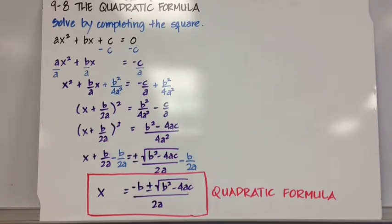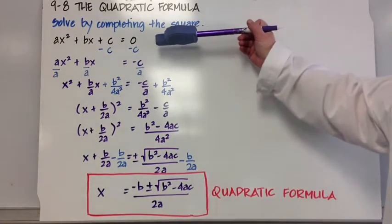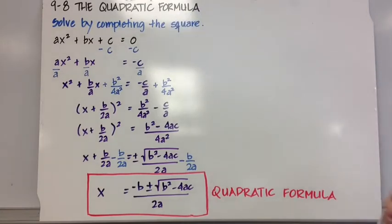Now that we've mastered completing the square, we're going to use that process to derive the quadratic formula. So here we have a standard form of a quadratic equation, ax squared plus bx plus c equals zero, and we're going to solve it by completing the square.